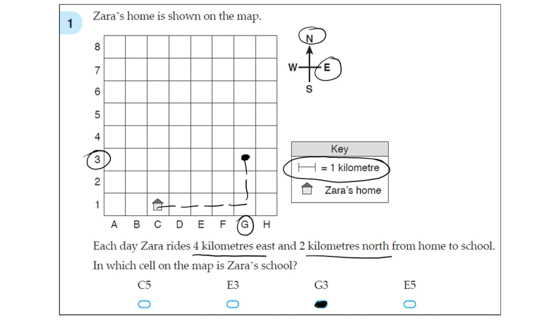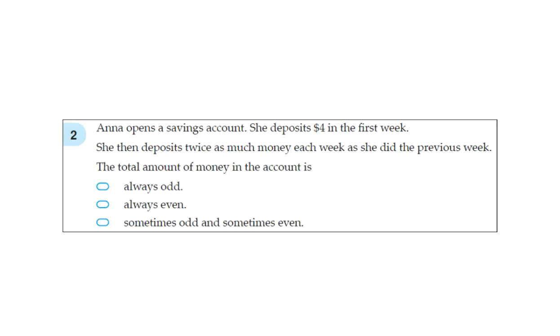Next question. Anna opens a savings account. She deposits $4 in the first week. She then deposits twice as much money each week as she did the previous week. The total amount of money in this account is... Is it always odd? Is it always even? Or is it sometimes odd and sometimes even?